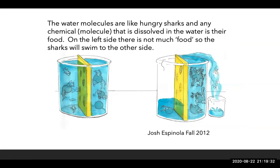This is an animation a student from Cerritos College drew in 2012 to help remember hypotonic and hypertonic solutions and the way water travels. If you think of water molecules like hungry sharks and any dissolved chemical as their food, the water will go to an area where there's more food. The sharks travel to where there's more food — that's how we get more water on one side of the membrane.